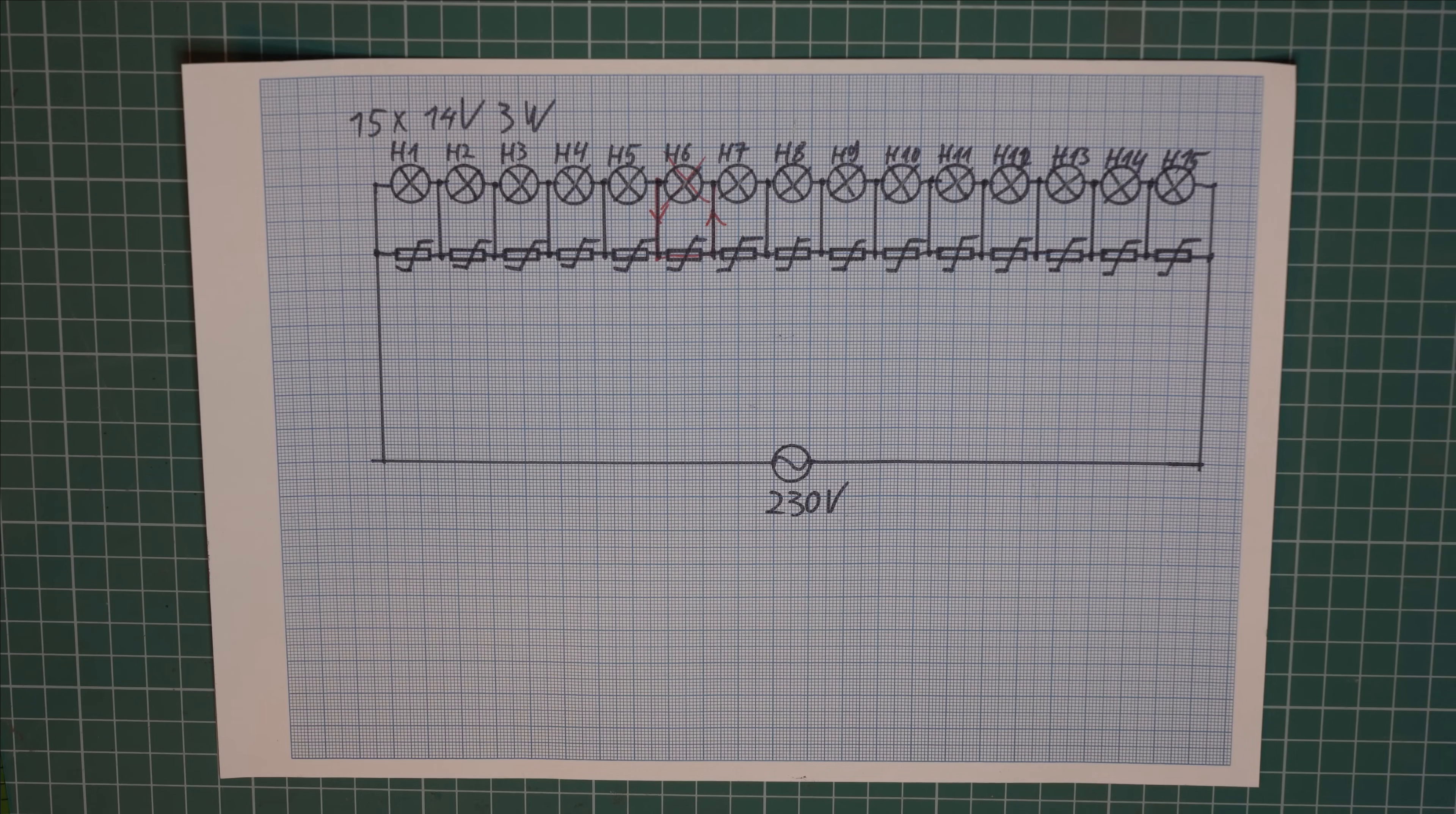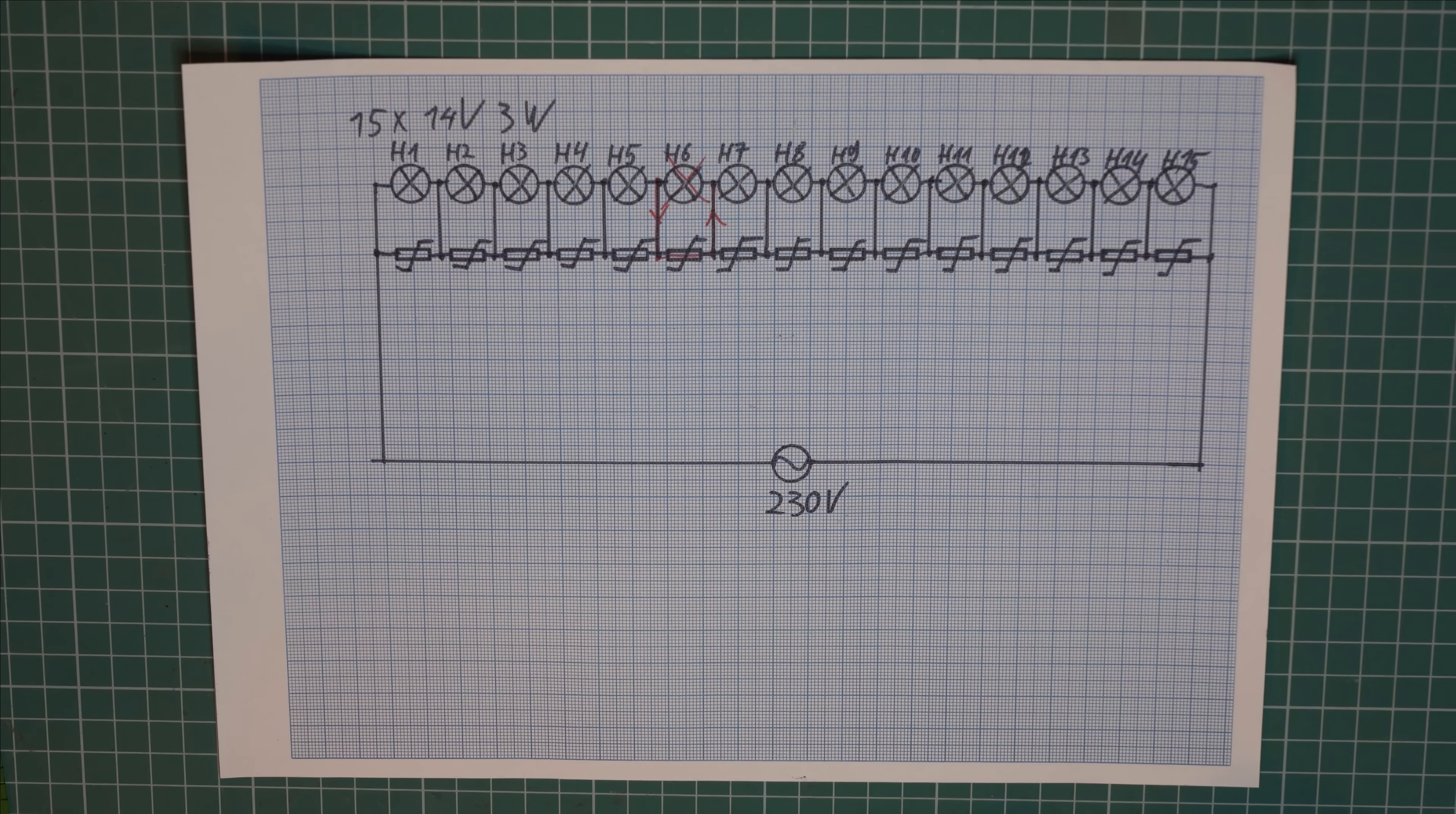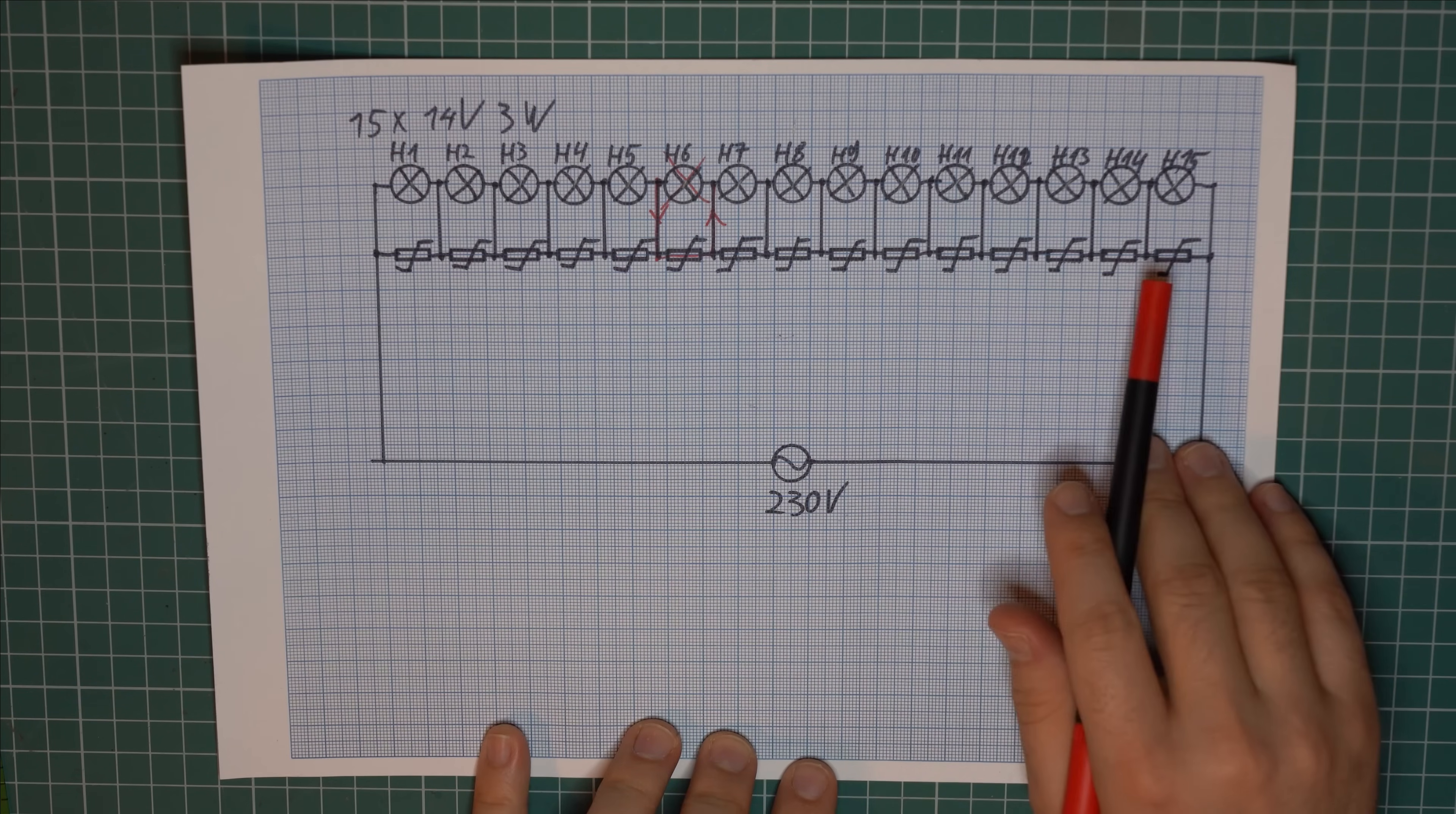Since one light is bypassed this means that every single remaining light will get a slightly higher voltage. And the slightly higher voltage makes the other lights more prone to failure. And also in my opinion there is another reason why this schematic is a really bad idea. And that is what happens if all the lights go out.